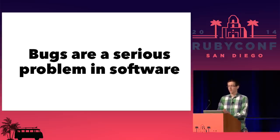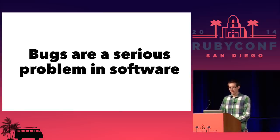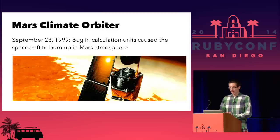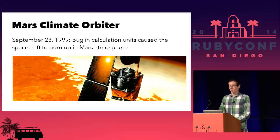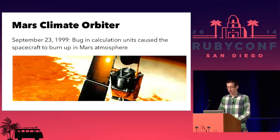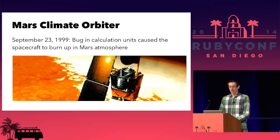I'm going to start by going through some of the notable bugs I remember over the course of my time alive. One of the worst ones: the Mars Climate Orbiter. This was in 1999. There was a bad computation that produced the wrong units, and the orbiter basically hit Mars at the wrong trajectory and burned up. Probably years of work, millions of dollars — just gone. The orbiter was destroyed. That's the stakes.